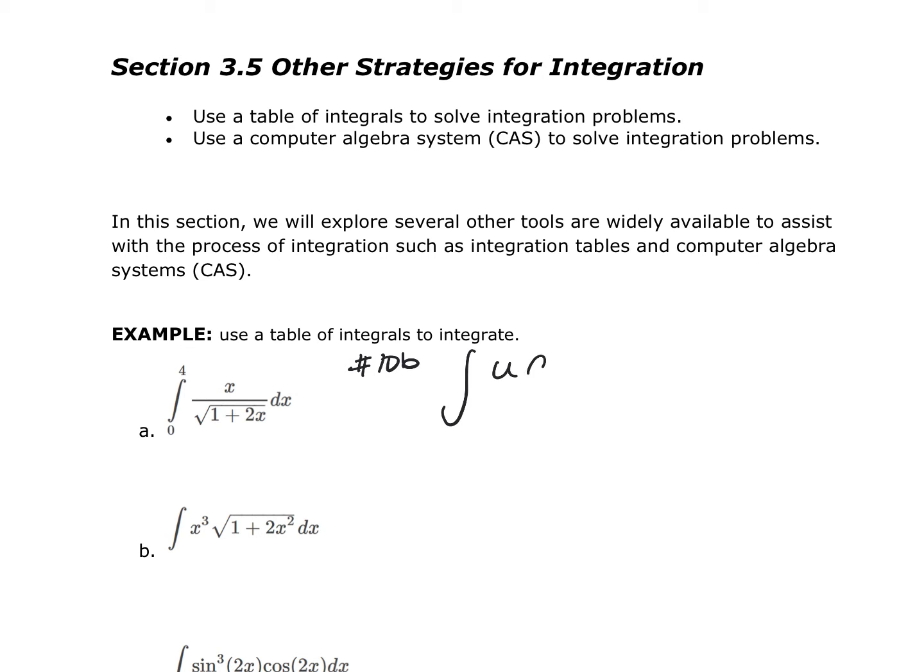It is u du over the square root of a plus bu. Now, you can see that a equals 1, b equals 2, and this would be the u.